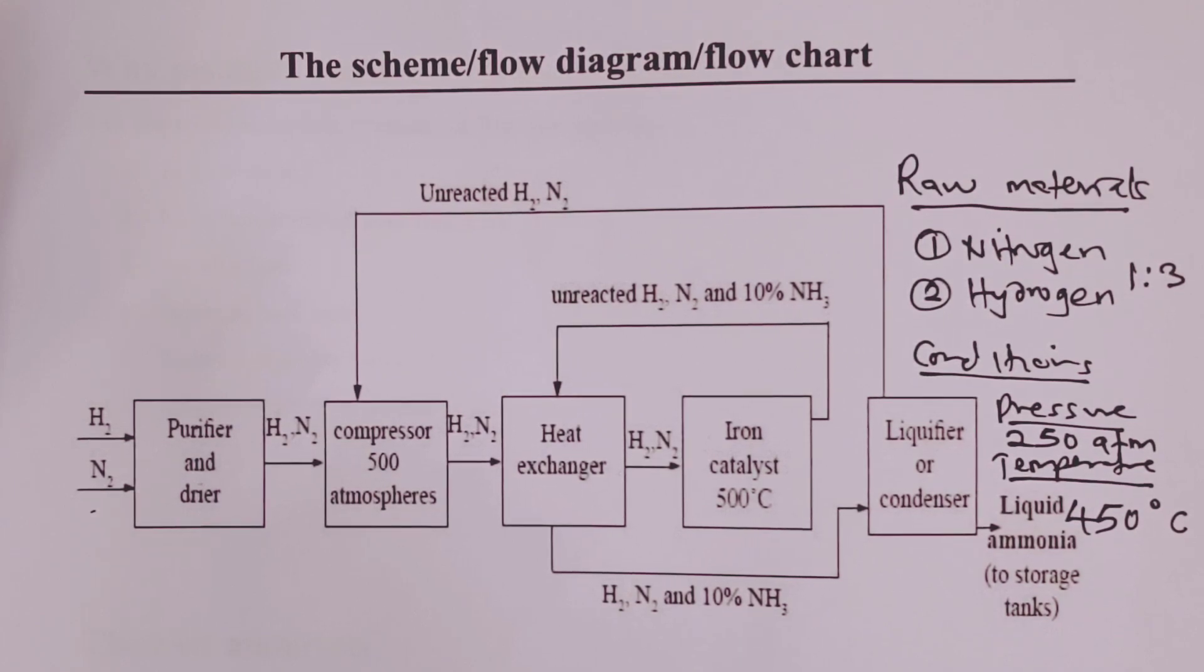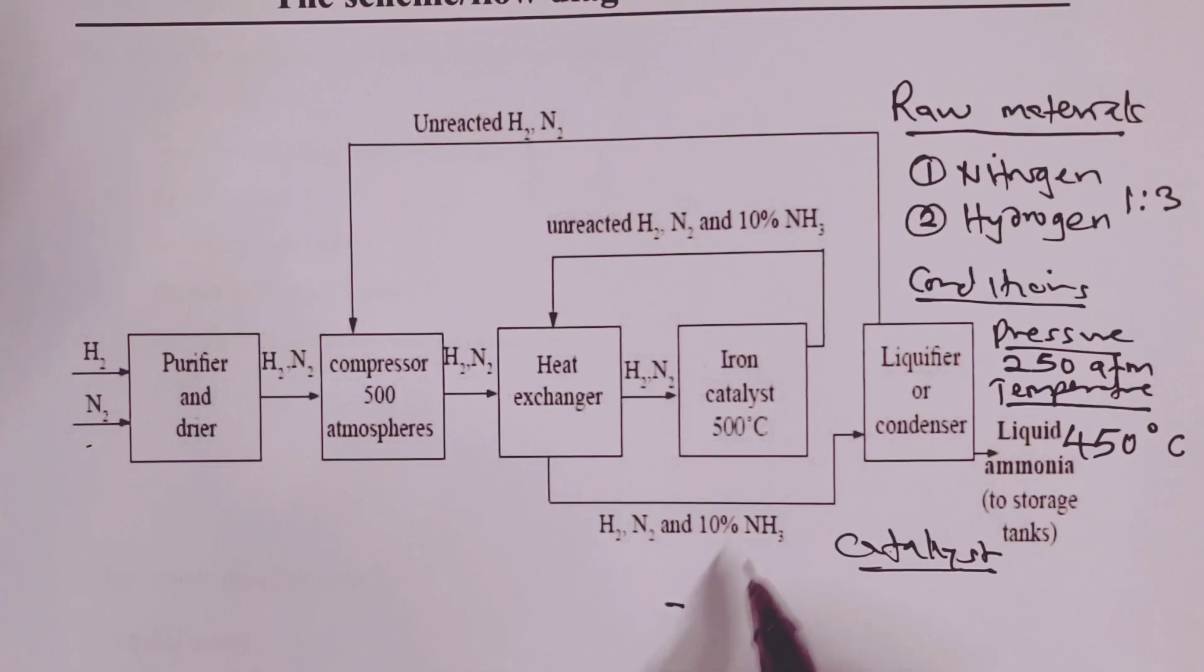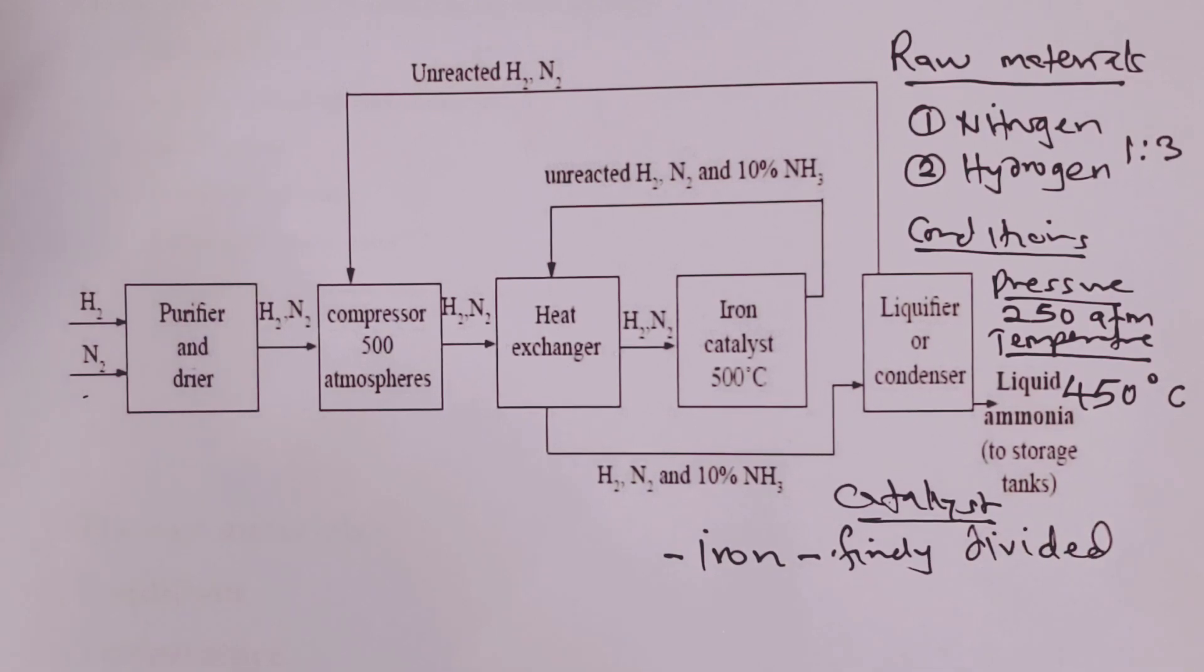Let us now review the catalyst used. So the catalyst used in the Haber process is usually iron. This iron, we divide it finely. So it is finely divided, and then we impregnate it with aluminum oxide. This aluminum oxide acts as the promoter for the catalyst. A promoter to a catalyst is simply a substance that increases the efficiency of the catalyst. Now, having gone through the raw materials, the conditions applied in Haber process, and the catalyst, let us now take a journey through our flow diagram.